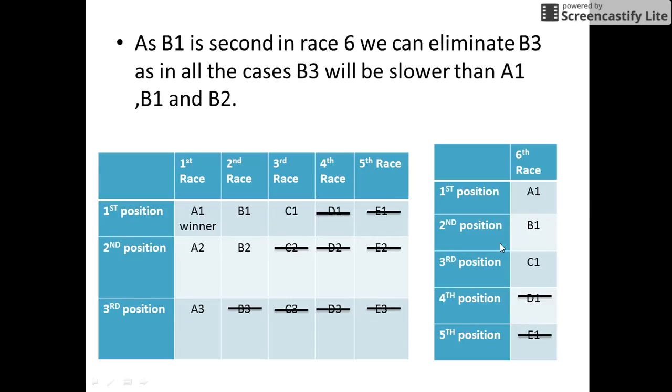Now, since B1 is second in the sixth race, we can eliminate B3 as in all the cases, B3 will be slower than A1, B1 and B2. Since we have to find only the top three positions, B3 gets eliminated.